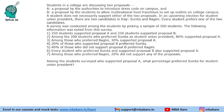Hello everyone, welcome to Aptitude Jab. This set from CAT 2019 Slot 2 DILR says that there is a college in which students are discussing two proposals. Proposal A is a proposal by the authorities to introduce a dress code, and Proposal B says students are allowed to have multinational food franchises set up outlets on the college campus.